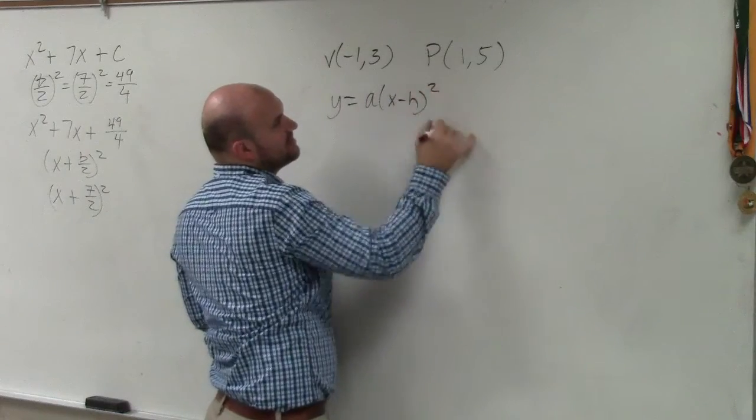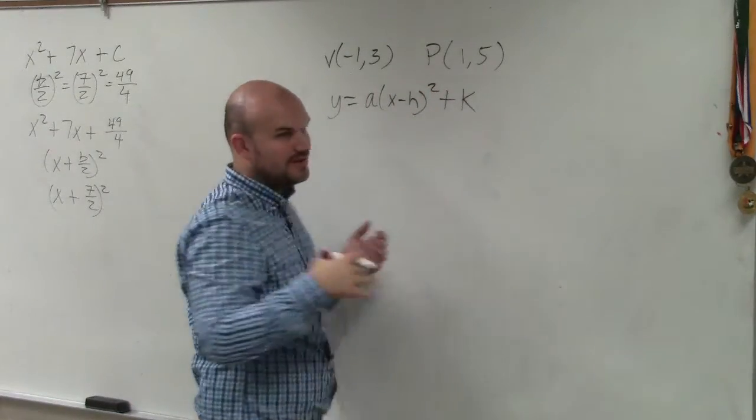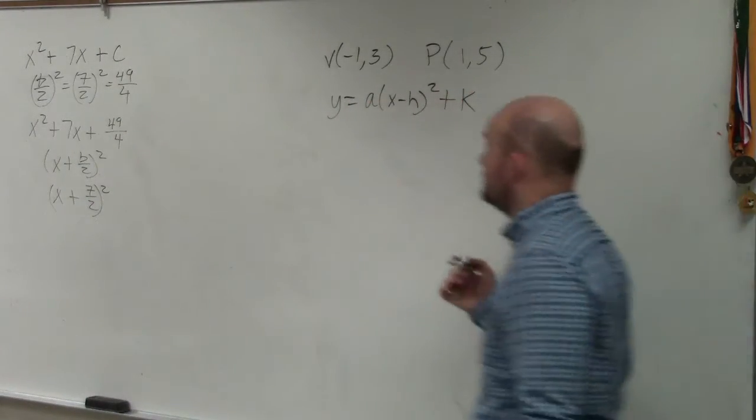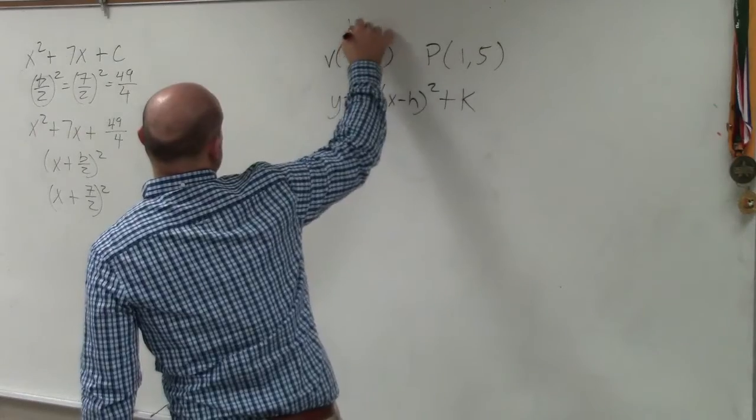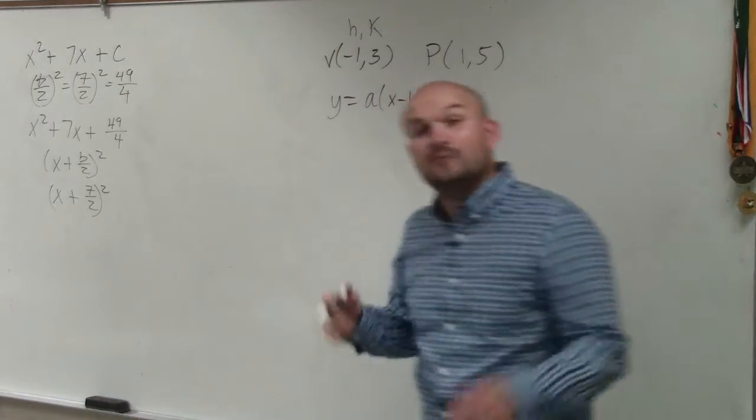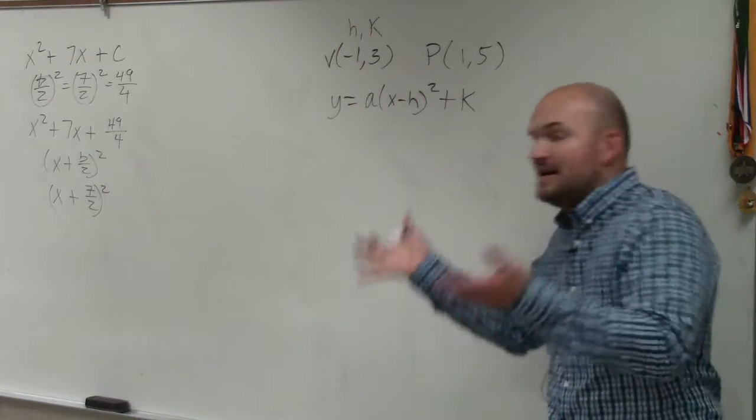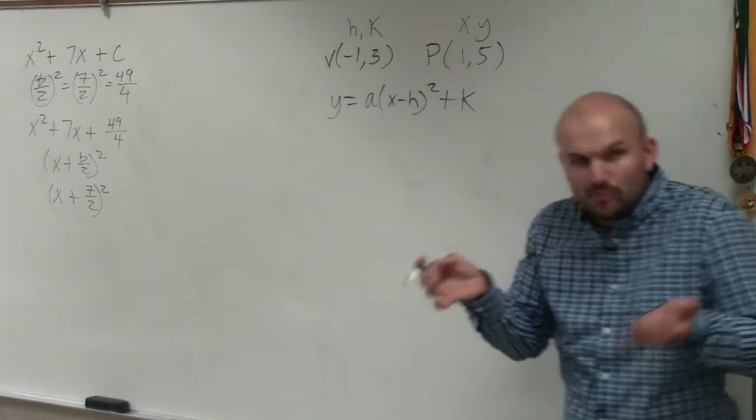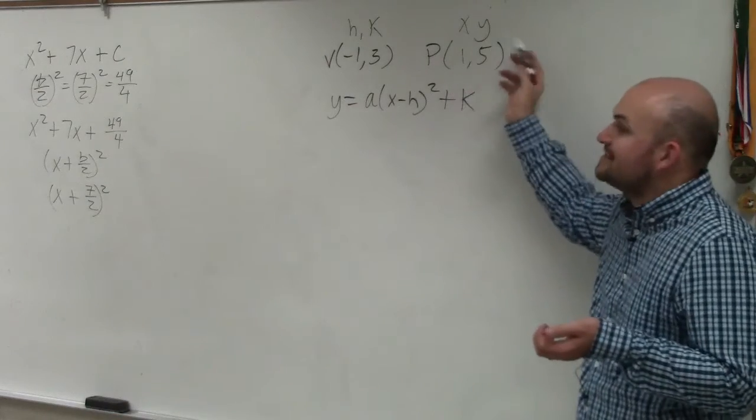So when you're given two points though, the best thing to write the equation line is to use our vertex form. And the reason why vertex form is helpful, because when you're given the vertex, you're given h and k. And whenever you're given any point of a quadratic, of a line, of a cubic, anything, we know that point represents a point on a line. So it can be represented as x and y.